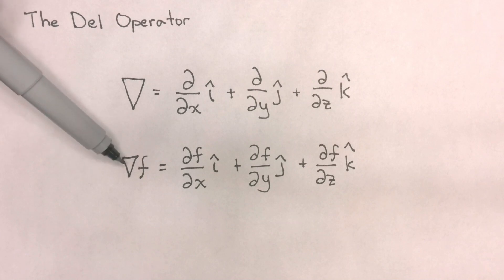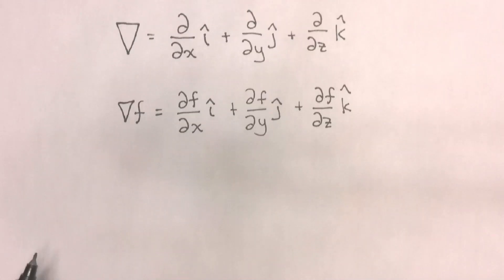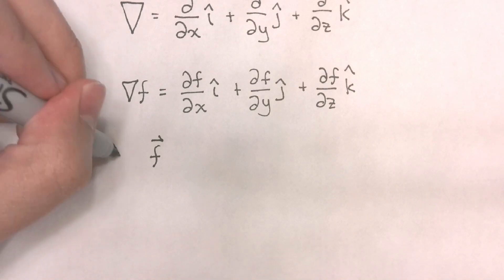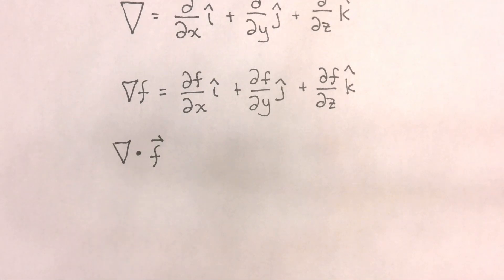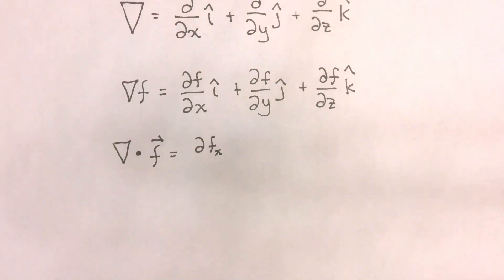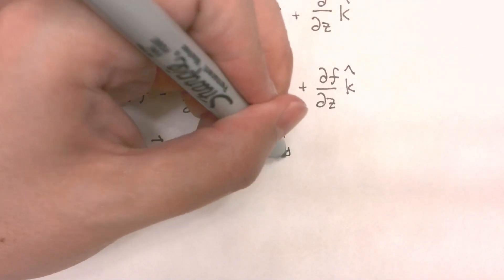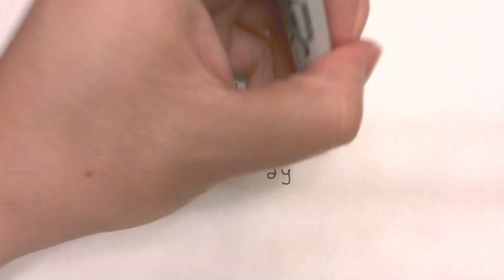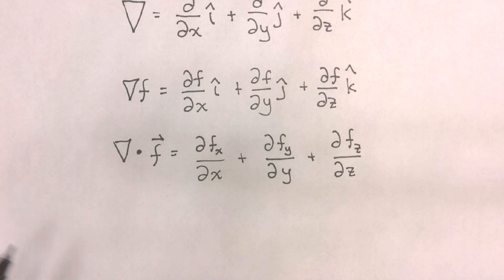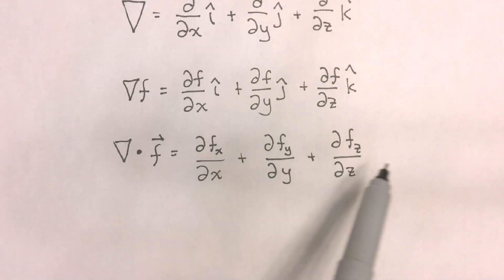We can also apply the gradient operator to a vector valued function to create a scalar function. Let's look at an example. If I define f as a vector, I can apply the gradient operator — written as del dot f. The dot product del dot f will equal the partial change of the x component of this vector with respect to x, plus the partial change of the y component of f with respect to y, plus the partial change of the z component of f with respect to z. Notice that applying this operator to a vector valued function gives a scalar — there are no vectors in the result.